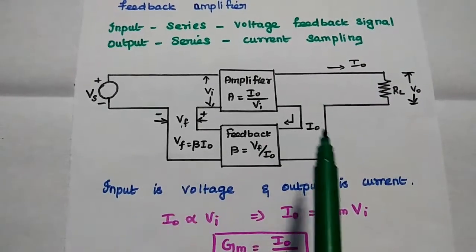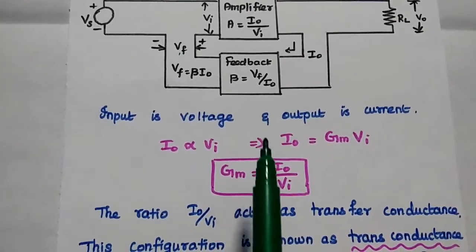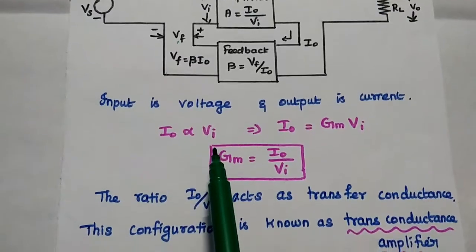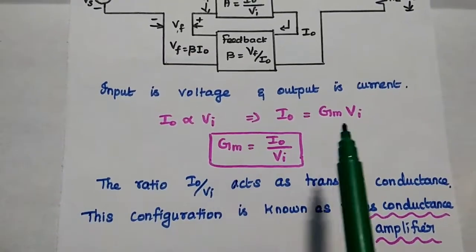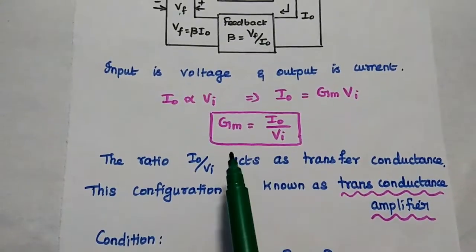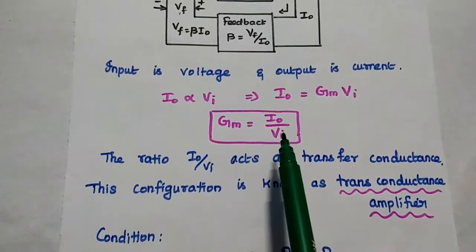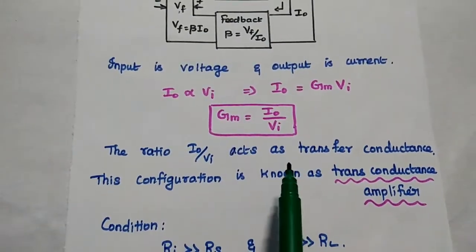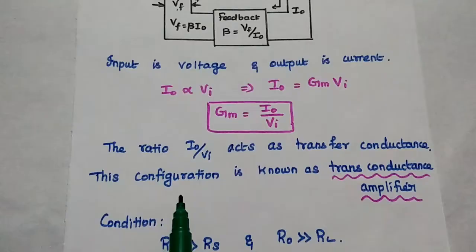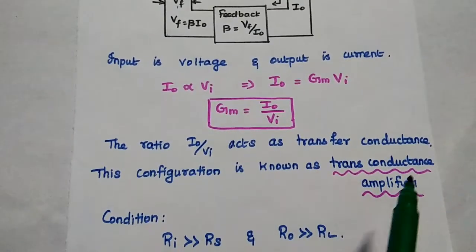Output is VF and input is IO. Here the input is voltage and the output is current. That is, the output current is directly proportional to input voltage. The proportionality constant is nothing but Gm, that is equal to IO by VI. The ratio of current to voltage is called transfer conductance. Hence, this configuration is also known as transconductance amplifier.